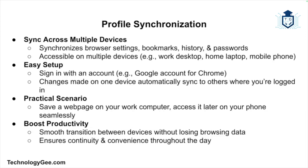Another useful feature is profile synchronization. Profile synchronization allows you to sync your browser settings, bookmarks, history, and passwords across multiple devices using a single account. This is especially useful if you use different devices throughout the day, like a desktop at work and a laptop at home. In Chrome, you can sign in with your Google account to enable synchronization — once signed in, any changes such as adding a bookmark will be reflected across all devices. For example, if you save an important web page on your work computer, with profile synchronization the bookmark will automatically appear on your mobile browser, making transitioning between devices seamless and boosting productivity.